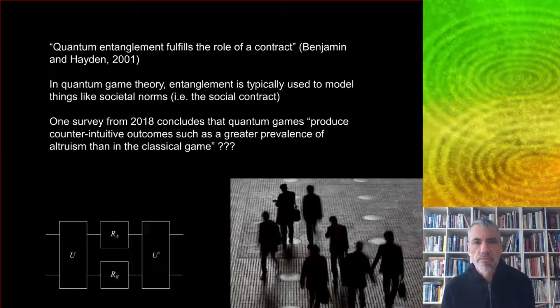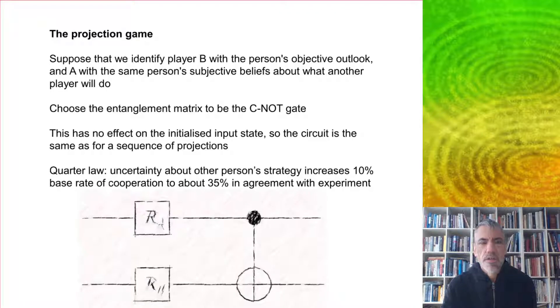One survey from 2018 concluded that quantum games produce counterintuitive outcomes such as greater prevalence of altruism than in the classical game. I think that's interesting - one thing about classical game theory is that it seems to teach you that altruism is counterintuitive.